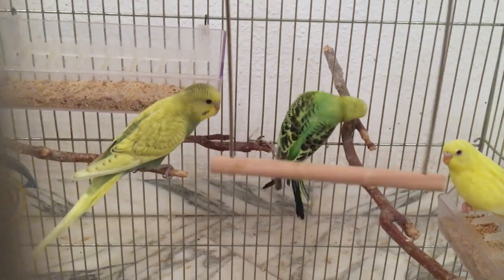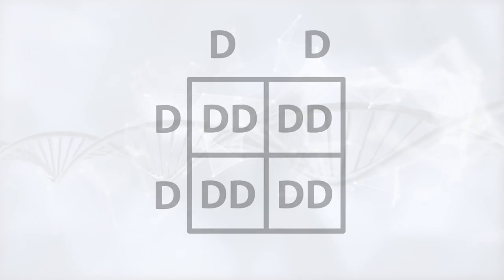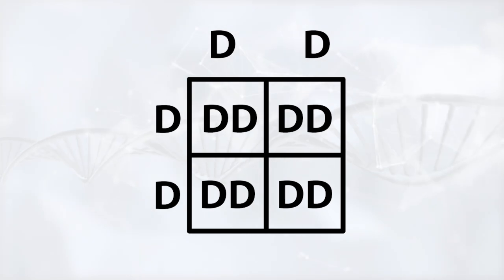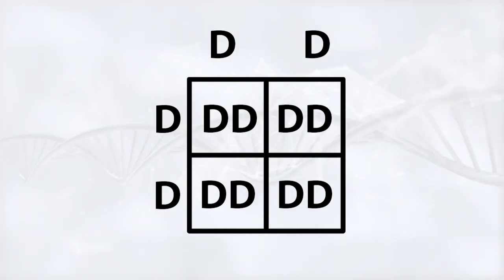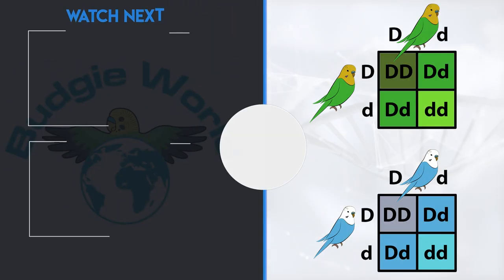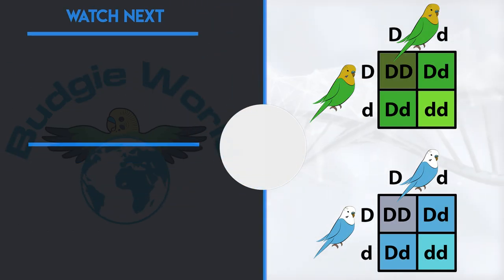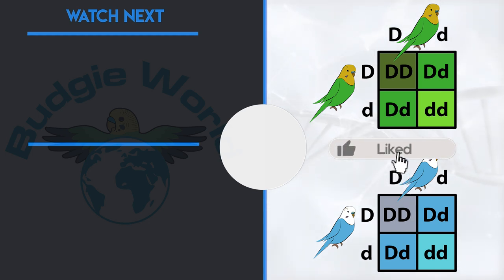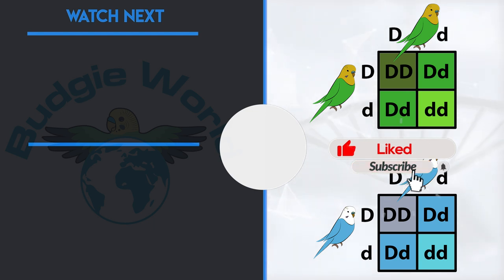Just to elaborate: if you breed two budgies having double factor dark genes, then all their offspring will be either olive or mauve. I hope this clears things up and now you can better understand your budgie's color mutation. For more about budgies, make sure to subscribe to the channel and hit the bell icon to get notified when the next video is up.